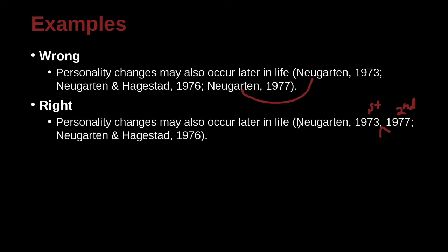The next issue is we have Newgarten alone and Newgarten with Hasgard. We use a semicolon between different author groups. Here we have Newgarten alone — nothing more — versus Newgarten and Hasgard. So Newgarten alone comes before Newgarten & Hasgard because an empty entry is treated as earlier than the letter H. H becomes later, because H goes after empty. That's a general rule: if something is empty, it comes before A or before 0.